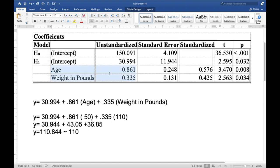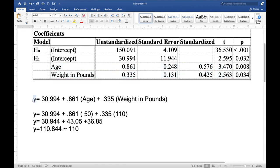For us to fully appreciate the result of the analysis, let's do a sample simulation. The y here is your dependent variable which is the systolic blood pressure reading. 30.994 is the intercept or the constant.